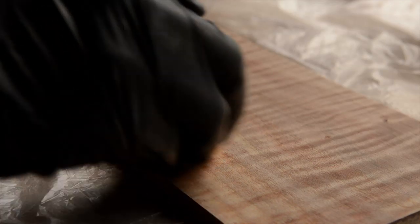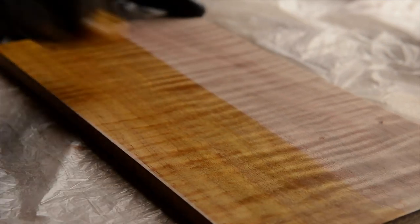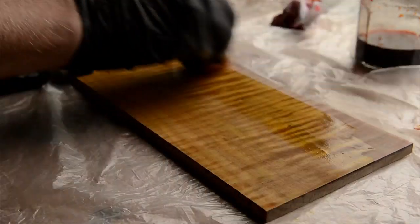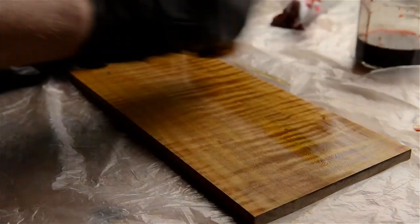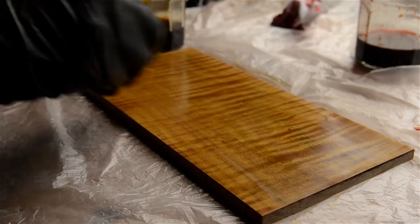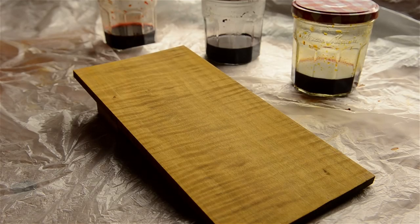I next add some warmth to the wood by following the same process for applying the yellow dye. However, this time I don't sand after applying the dye unless my dye concentration was too strong. At this point I leave the board to dry for several hours or until the next day.